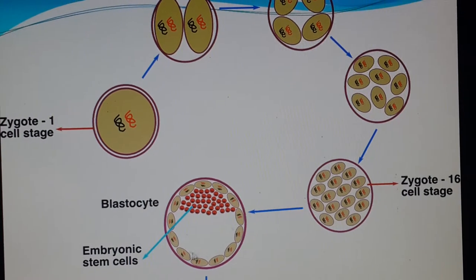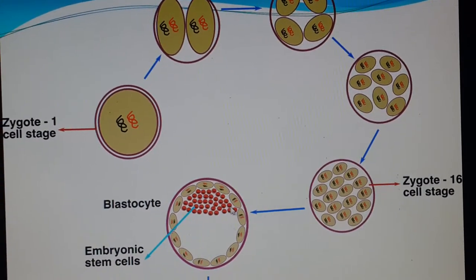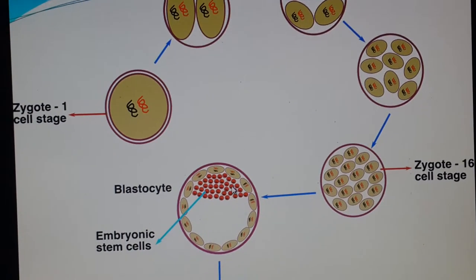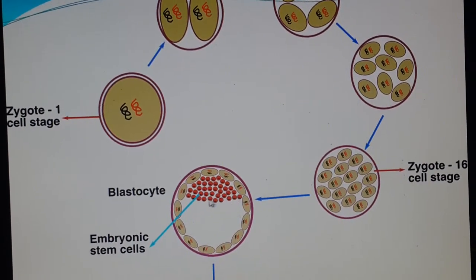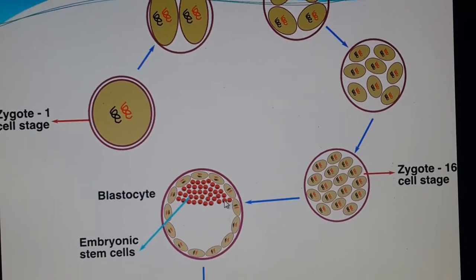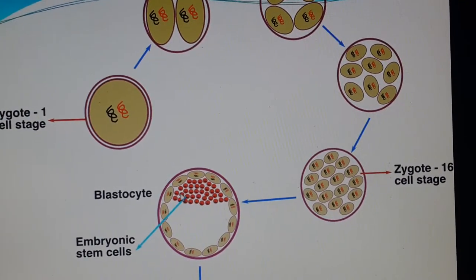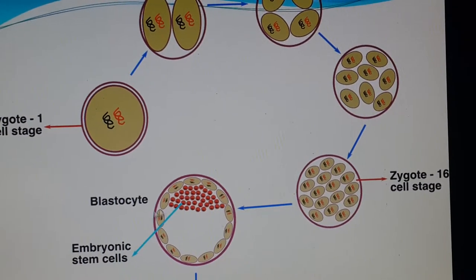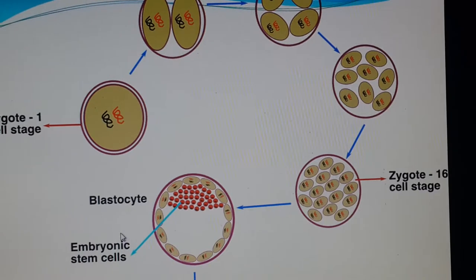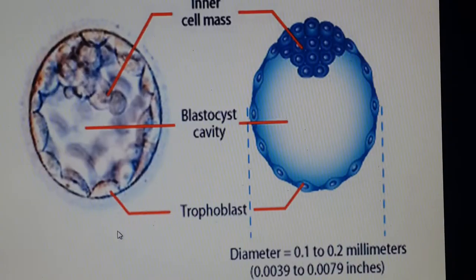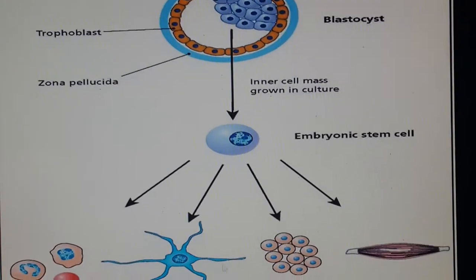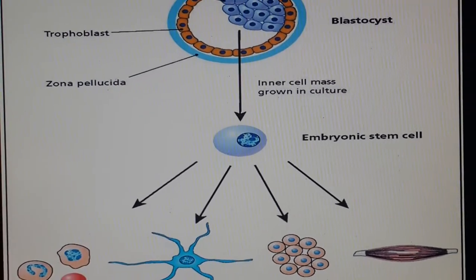The trophectoderm will form the placenta in the future. Some cells are trapped inside the cavity of the blastocyst — these are called embryonic stem cells, or they are the inner cell mass. They are the embryonic proper. We call them embryonic proper because they will give rise to the stem cells. These stem cells will give rise to blood cells, neurons, pancreatic cells, and muscle cells.